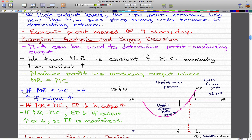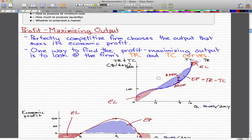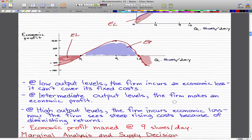We're finally on the topic of marginal analysis and supply decision. The firm can use marginal analysis to determine the profit maximizing output. We know that marginal revenue is constant and marginal cost eventually increases as output increases, which we found out in the last video with this graph.